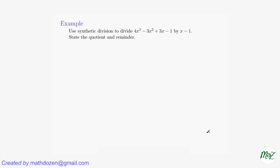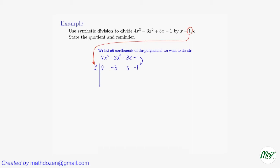Let's now use another method of division to divide by x minus 1. Synthetic division works only when we divide by x minus a number; otherwise synthetic division doesn't work. But we list all the coefficients of the polynomial we'd like to divide. So we have 4x cubed minus 3x squared plus 3x minus 1. We move that into 4, negative 3, 3, negative 1, and then put a vertical sign and put the number we subtracted from x to the left. So if it's x minus a number, we just keep the number here.